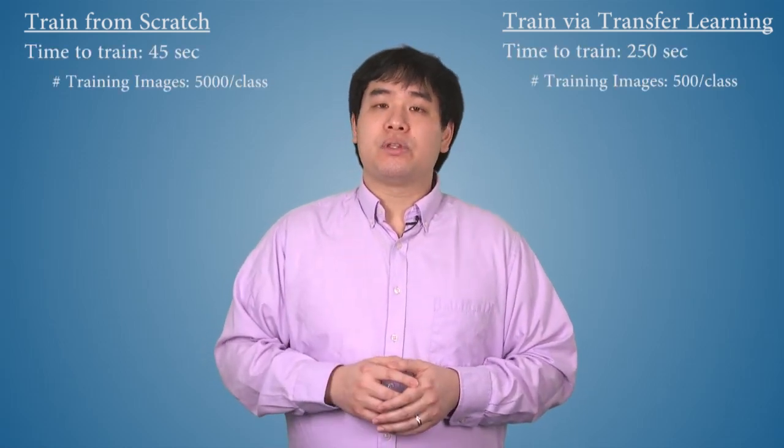Our goal is to make a classifier on images of four animals: cats, dogs, frogs, and deer. As a point of reference, we've previously created a network from scratch, and a network using transfer learning to accomplish the same classification task. Those networks took around 45 and 250 seconds to train, respectively, with overall accuracies of 75 and 85%. And just to keep us honest, we're going to use the same set of images to train and test our new classifier.